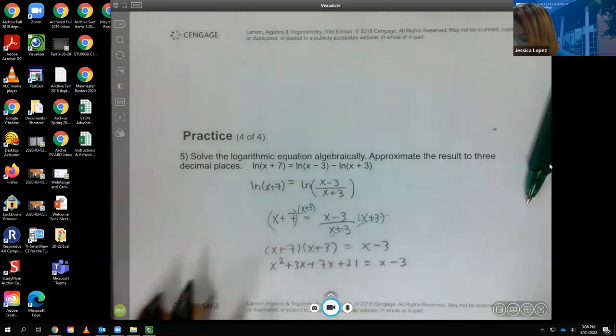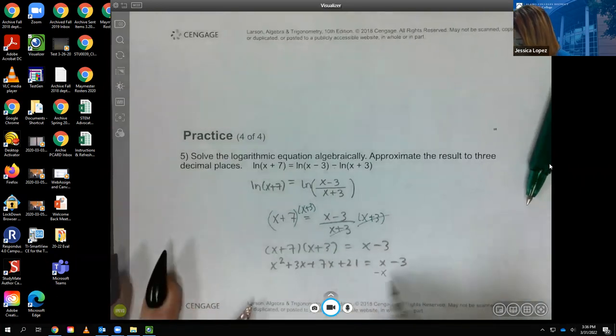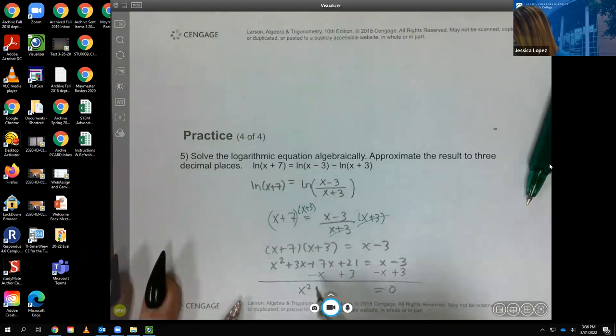And so this is a quadratic. So I'm going to go ahead and minus x on both sides and add 3 on both sides so I can get that quadratic equal to 0. So that's 10 minus 1, which is 9x. And then that's 24.